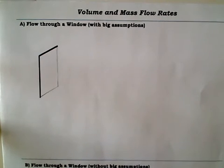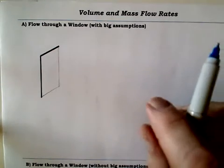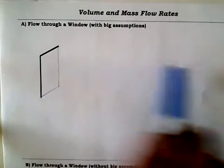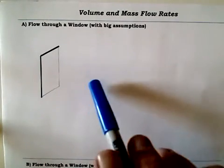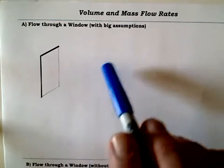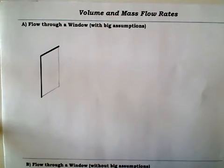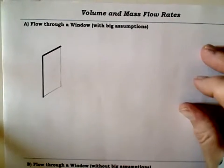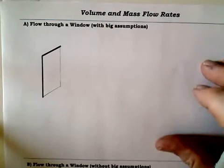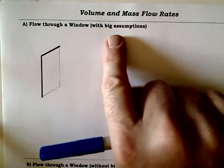Welcome to my flow rate video. What I'd like to do is derive a couple of big formulas for flow rate. The question is: I've got some flow of a fluid going by — air, water, whatever — and how much is flowing by per unit time? What mass of fluid per unit time, or what volume of fluid per unit time? These are formulas you'll see at the beginning of any fluid mechanics course, and I mostly want to show that you can get these formulas pretty quickly if you let yourself make some really big assumptions.